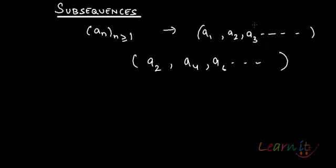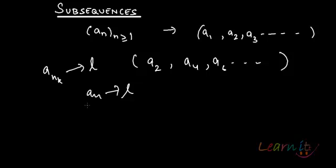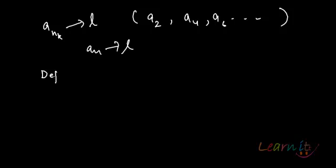If there is a sequence where I can't see all the terms and determine whether the sequence is convergent or not, what I could probably do is pick up certain subsequences from that sequence and see whether these subsequences a_n_k are moving towards the same limit. If they all are moving towards the same limit, that means the sequence will also move towards that limit. If they are moving towards different limits, that means the sequence has to be divergent.